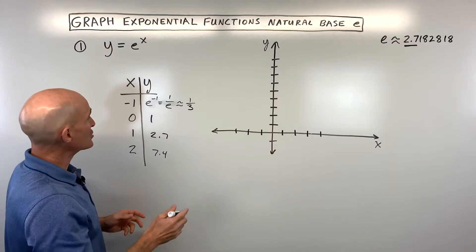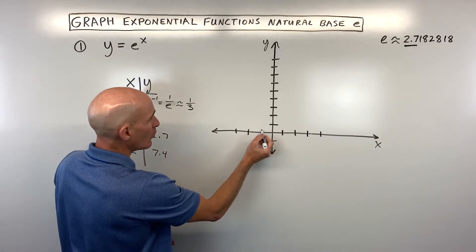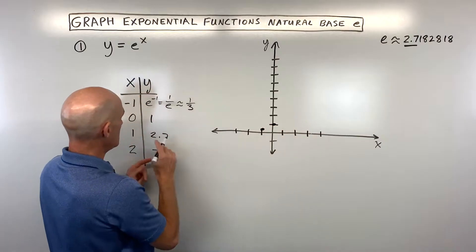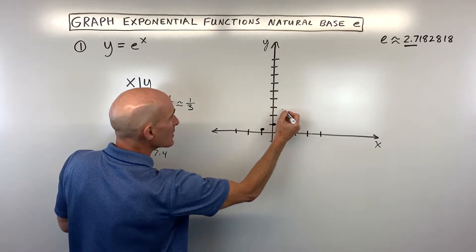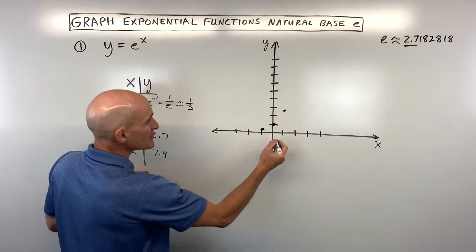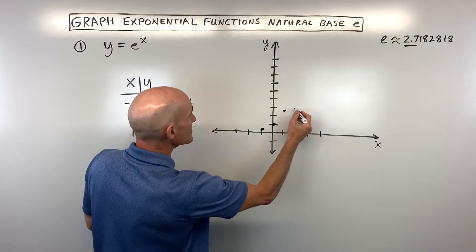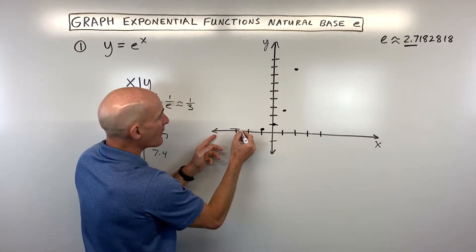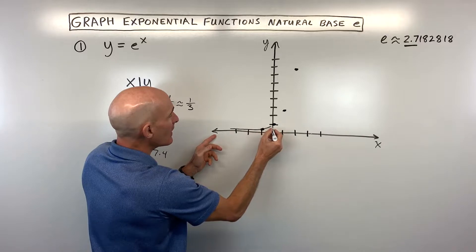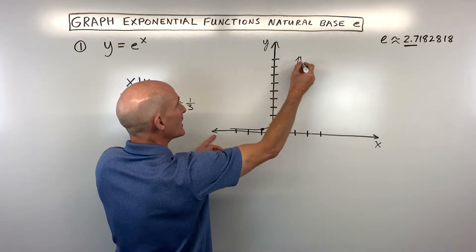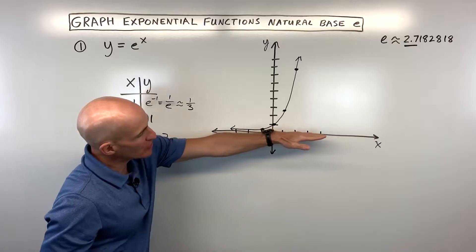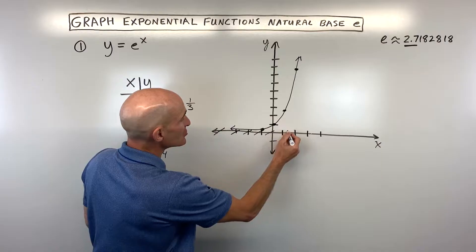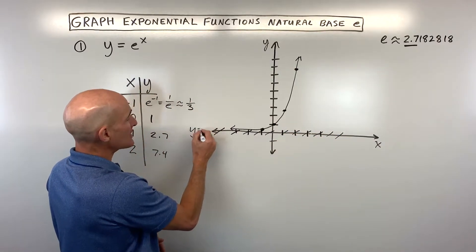If we make a sketch, negative one gives us one third — right about here. Zero, one puts us right here. At one, 2.7 is right about here. And two, 7.4 is right about here. So you can see what's happening with our graph — it's starting off and then it starts to go up at a faster and faster rate.